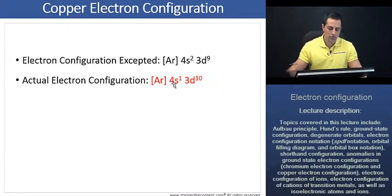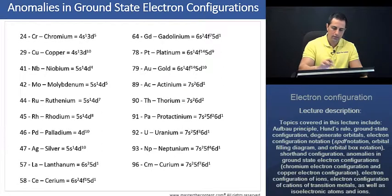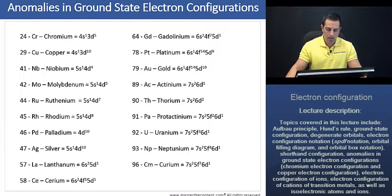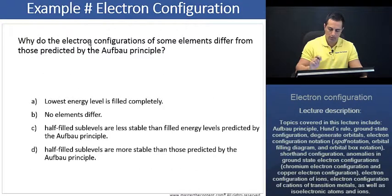Great, let's continue now to the next slide. Now here we've provided you with a list of anomalies in ground state electron configurations, beginning first with the atomic number, the elemental symbol, the name of the element, as well as its ground state electron configuration. Should you need it, it's here for you. Let's move on to our next slide here.